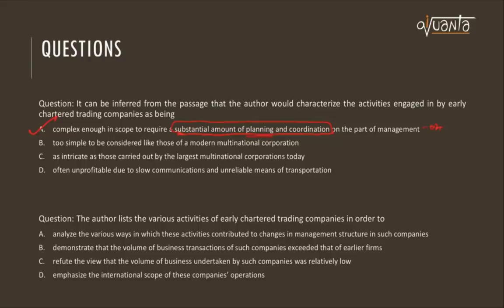Option B says they were too simple to be considered like those of modern corporations — incorrect, they were complex. Option C says they were as integrated as those of the largest modern multinationals — incorrect, the author draws parallels but doesn't say they're at par in complexity. Option D says they were often unprofitable due to slow communication — this is outside the scope of the passage, with no mention of profitability. So option A is the correct answer for question 3.